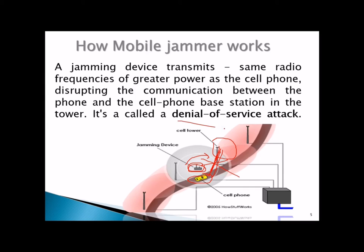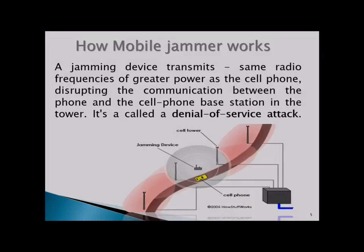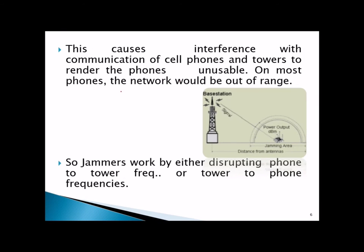This is also called a denial of service attack. It causes interference with communication between cell phones and towers, rendering the phones unusable — the network would appear out of range. For example, with a base station, a jamming area, and distance from the antennas affecting power output, signals are disrupted. Jammers can work either way — by disrupting phone-to-tower frequency or tower-to-phone frequency.